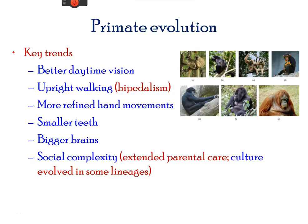They have the best daytime vision and very refined hand movements. They have smaller teeth and bigger brains, and lastly they have social complexity.